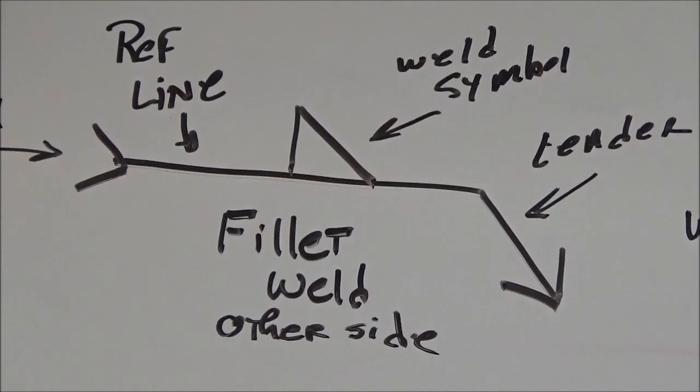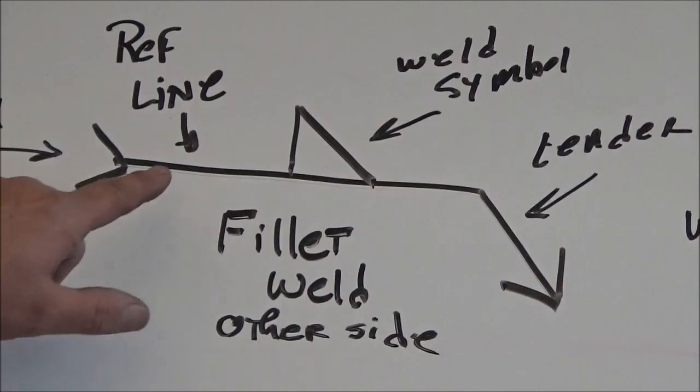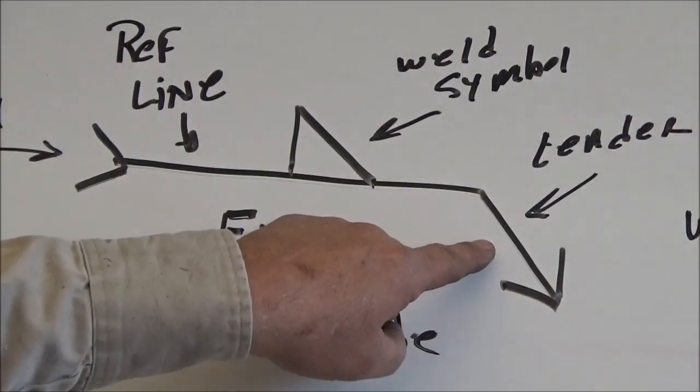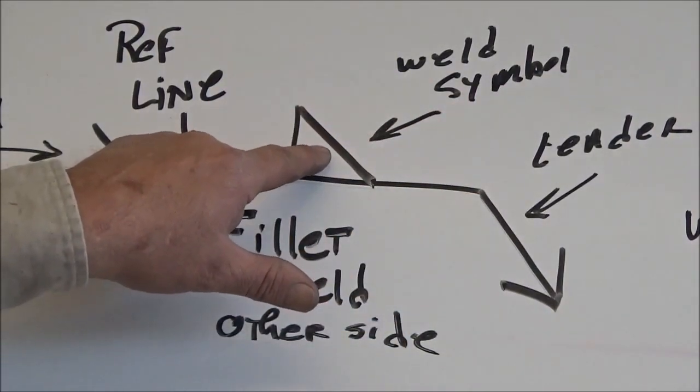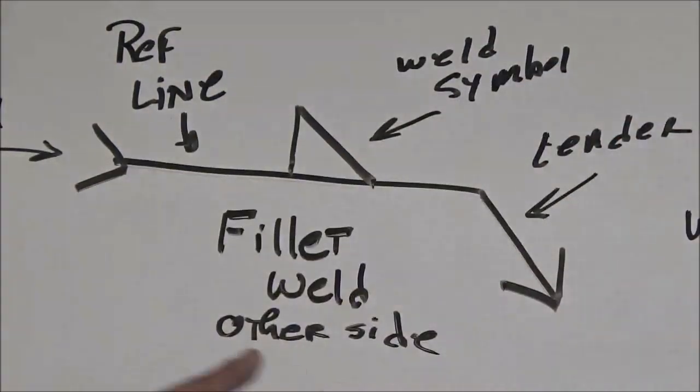Now then, let's take a look at what we talked about in the last video on welding symbols. Number one, this is known as our reference line. This is known as our leader. This is known as the weld symbol itself. And the whole thing together is called a welding symbol.